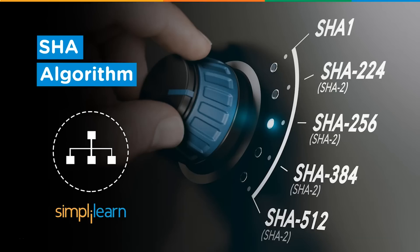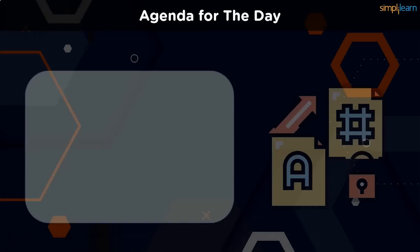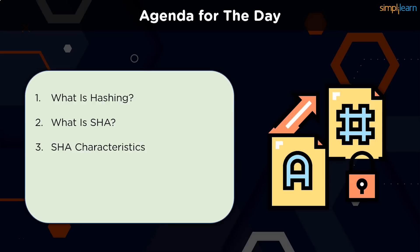Let's take a look at the topics to be covered in today's video. We take a look at what is hashing and its principles, examples, and applications. We learn about the origin of the SHA algorithm along with its methodology. There are some distinct characteristics of the SHA family that we cover, the steps needed to create hashed values, and the prospective advantages.